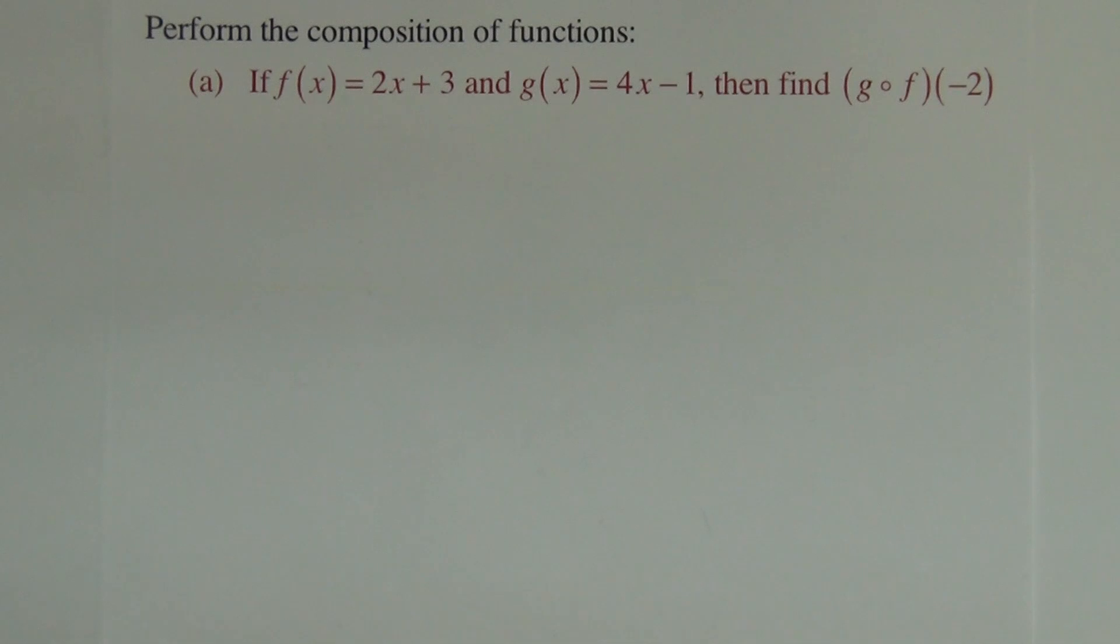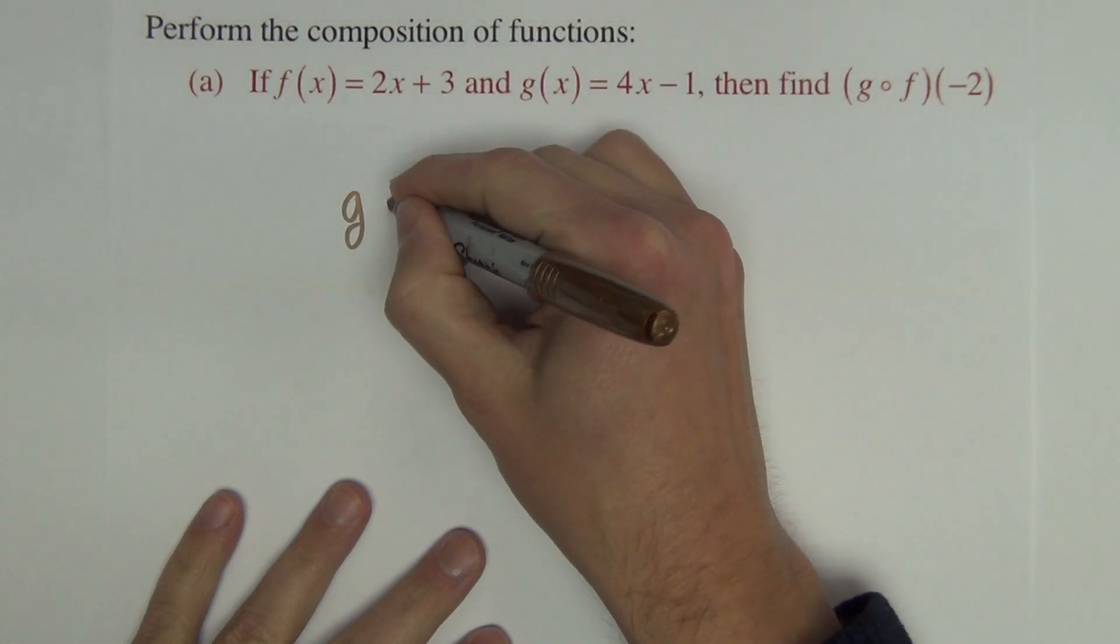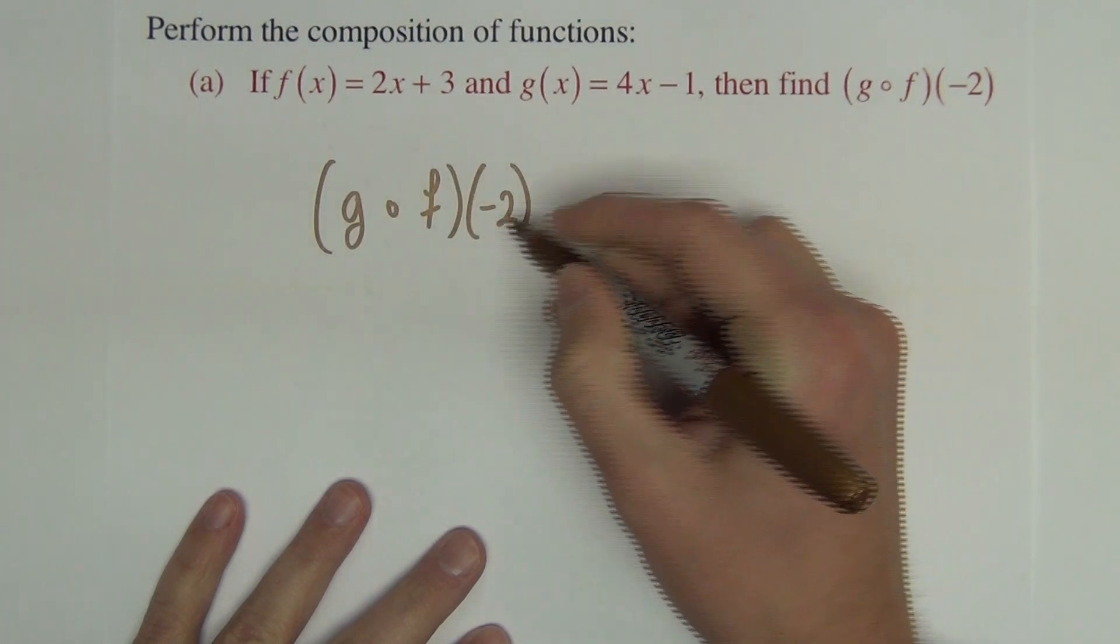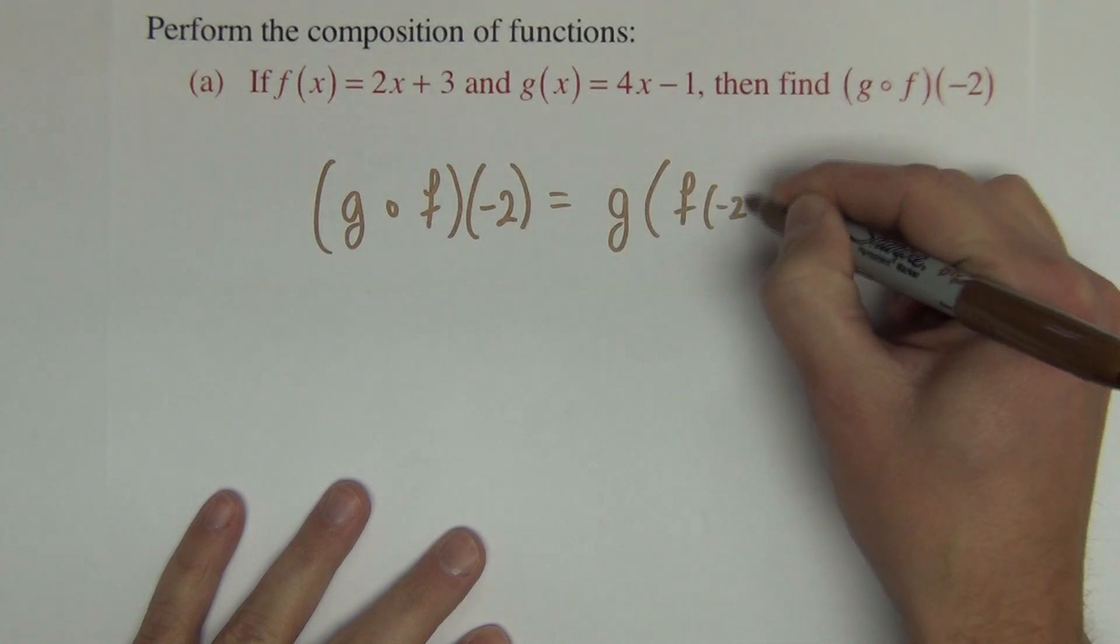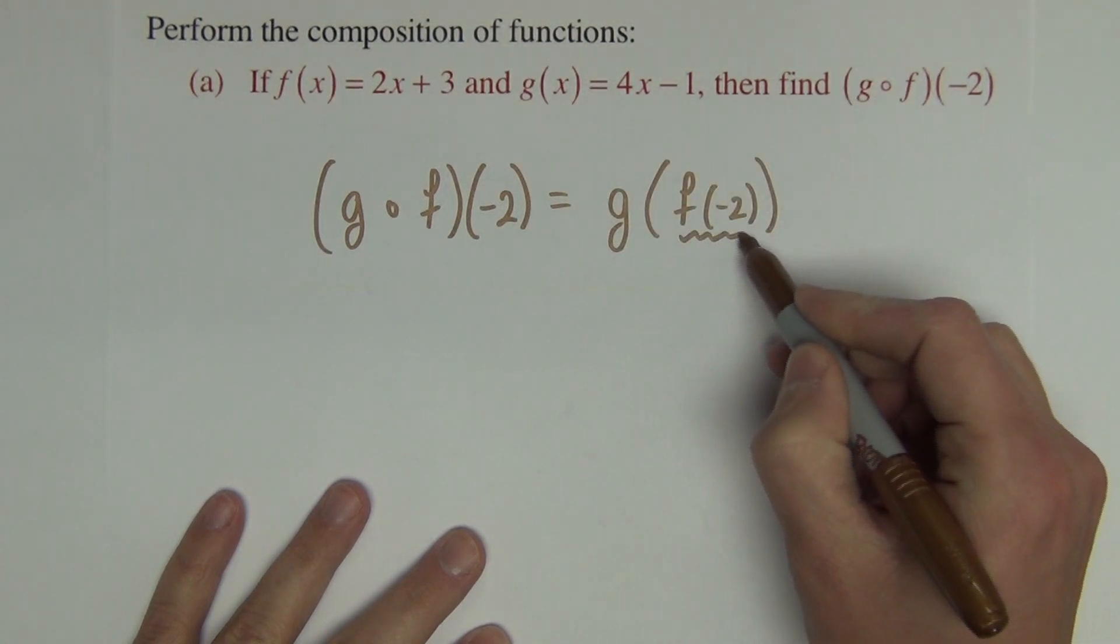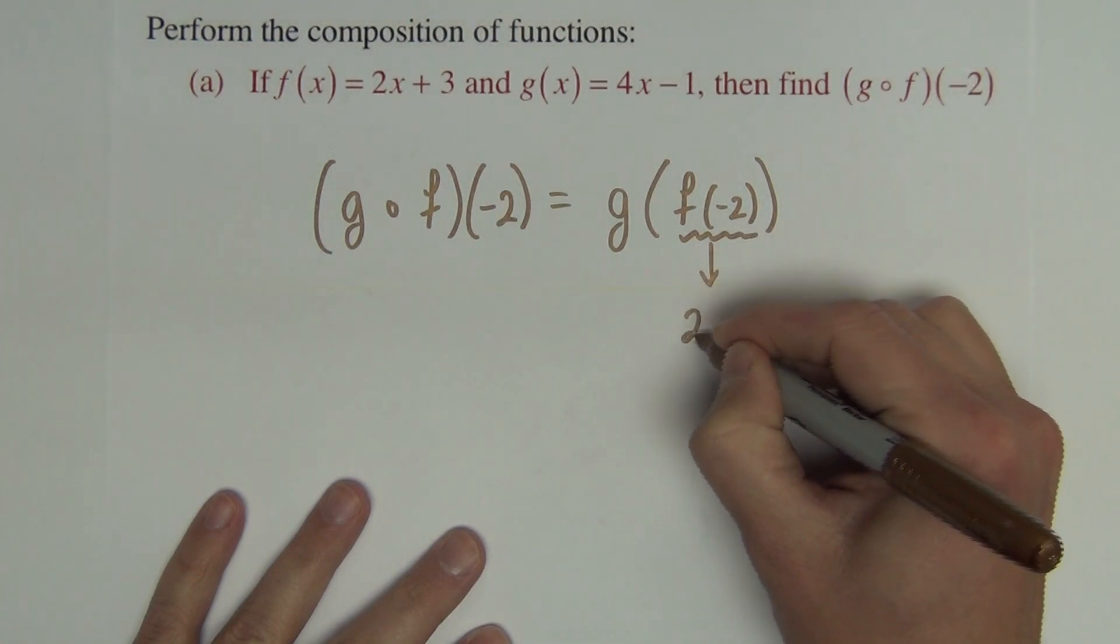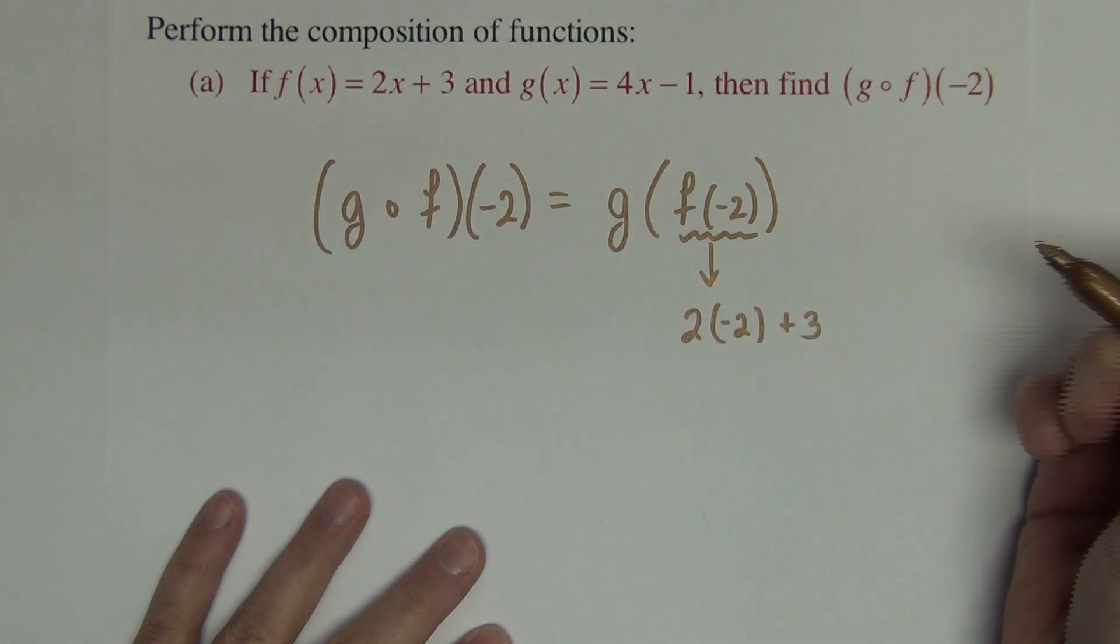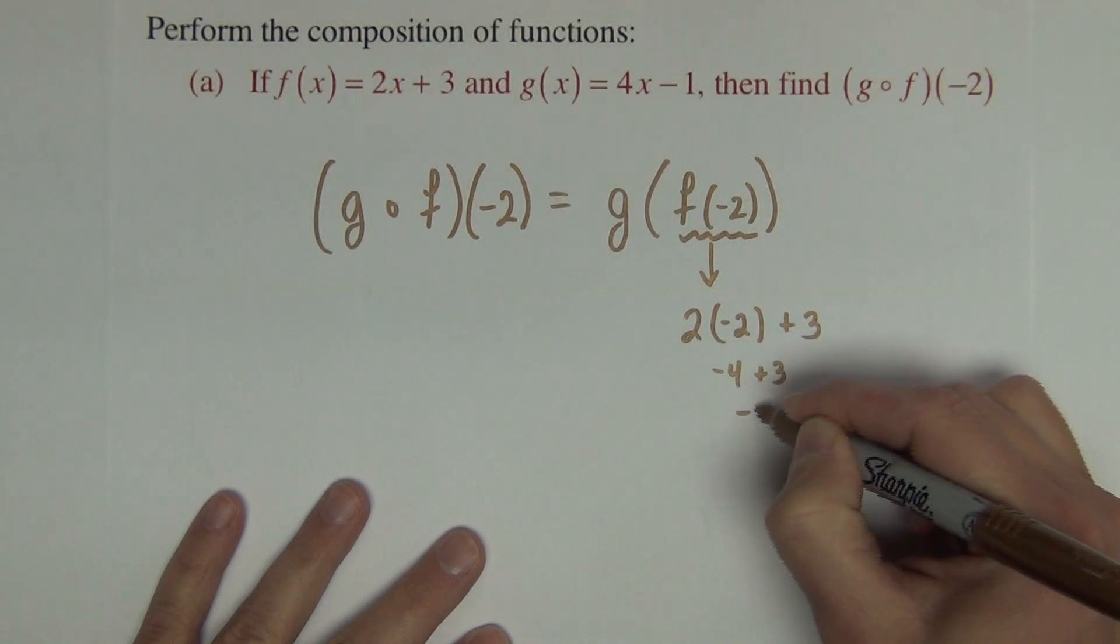Directions ask you to perform the composition. If f(x) is 2x plus 3 and g(x) is 4x minus 1, find g of f of negative 2. Now that can be rewritten, g of f of negative 2. So I'm going to start just right there. f of negative 2 uses the f function, which is 2x plus 3. f of negative 2. We're putting negative 2 in for the x. So that comes out to be negative 4 plus 3, which is negative 1.